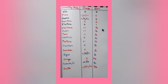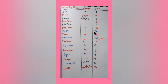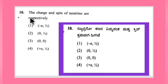Depending on the HSTR syllabus, elementary particles may be explained in detail later. For now, to identify the answer: the charge of a neutrino is zero, and its spin is 1/2. So option number 2, that is charge = 0 and spin = 1/2, is the right answer for the charge and spin of a neutrino.